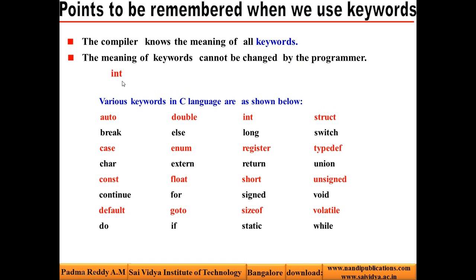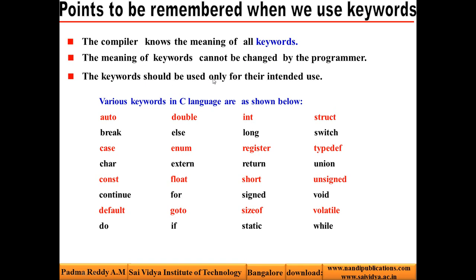We say the compiler knows the meaning of all keywords. Point number 2: the meaning of keywords cannot be changed by the programmer. For example, if we write int, the compiler knows we are manipulating integer data — we cannot tell the compiler to manipulate floating point data instead. Point number 3: the keywords should be used only for their intended use. For example, if we write int, we are supposed to manipulate only integer data and not floating point numbers such as 99.6.